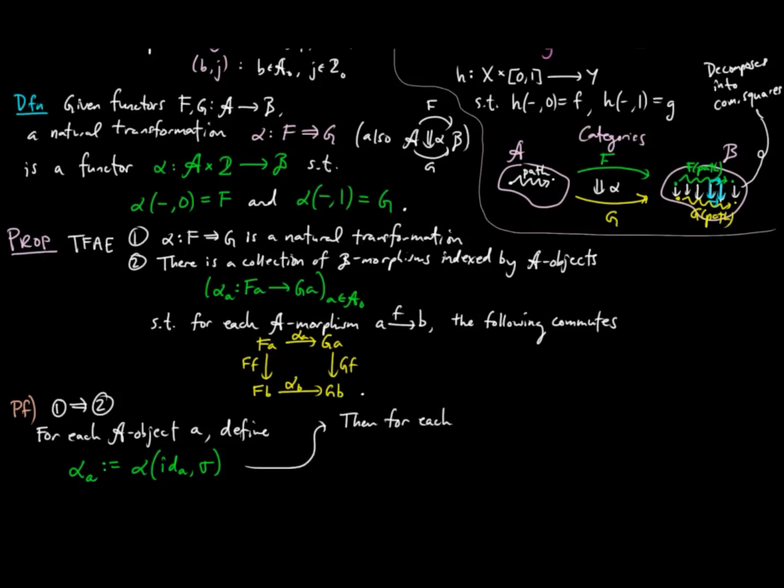Then for each amorphism F from A to B, since the following commutes in A cross 2, and the functor alpha preserves commuting diagrams as all functors do, we have the following commuting in the category B. Therefore, 2 holds.